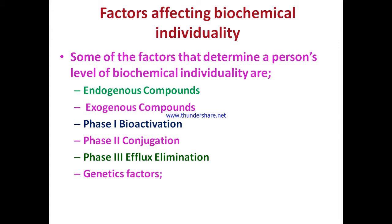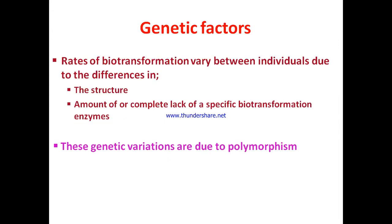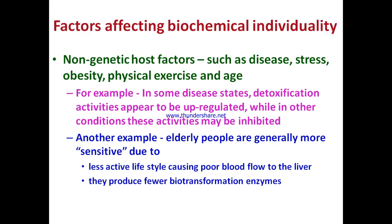Genetic factors: the rate of biotransformation varies between individuals due to differences in the structure and amount of specific biotransformation enzymes, which is determined by the organism's genetic makeup. The genetic variation in enzyme structure and amount is due to genetic polymorphism, which is one of the key factors affecting biochemical individuality.